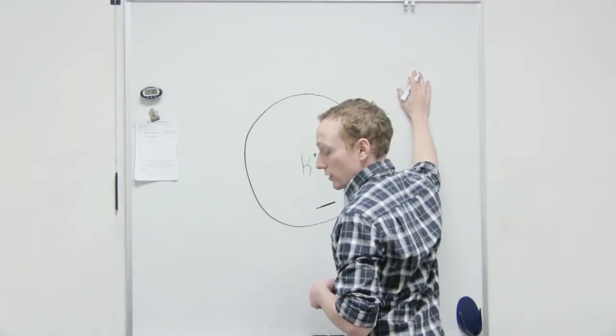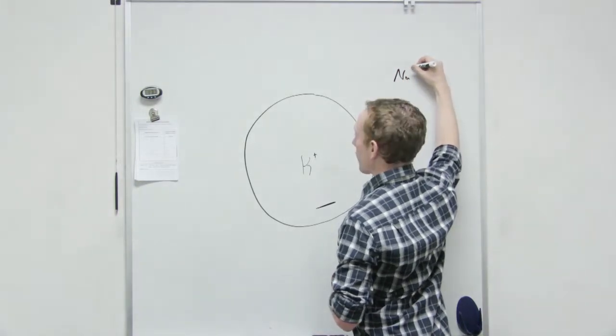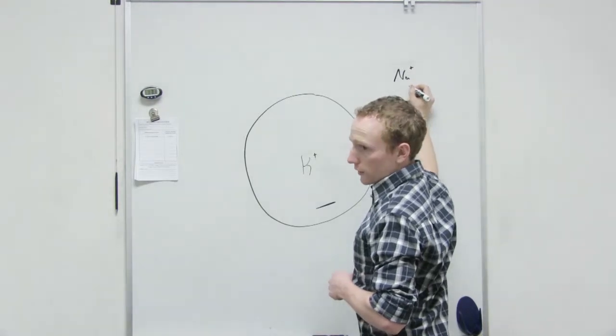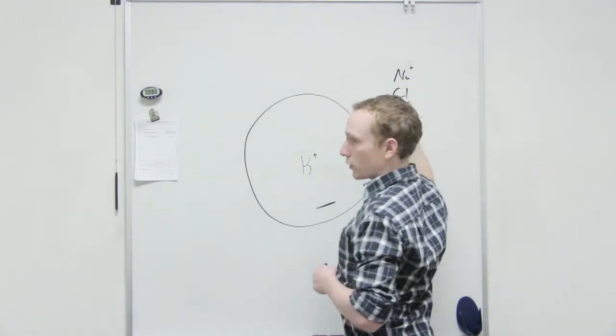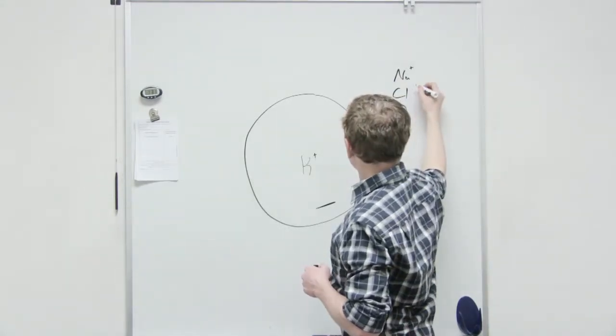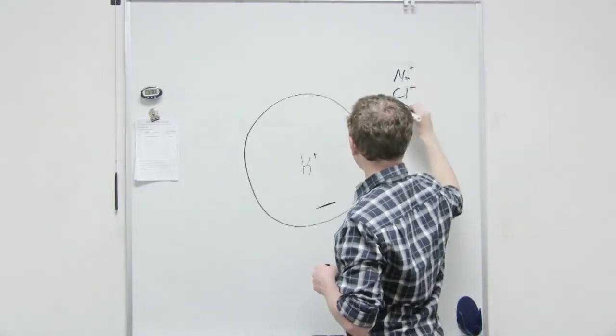What's high in concentration outside the cell? Sodium. What's its charge? Positive. What else? There are two other important things. Is it chloride? So, there's chloride. What's its charge? That one is negative. That one is negative. And one more.